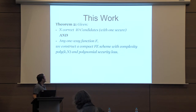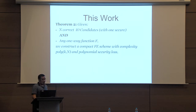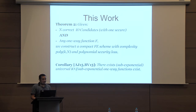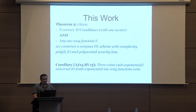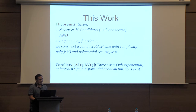The second result is: given N correct IO candidates and any one-way function F, we can construct a compact function encryption scheme with only polynomial security loss. Using this and results by Anant and Jain and by Bitansky and Vaikuntanathan — who proved that sub-exponentially secure compact function encryption implies IO — we get the corollary that sub-exponential universal IO exists if there exist sub-exponentially secure one-way functions.